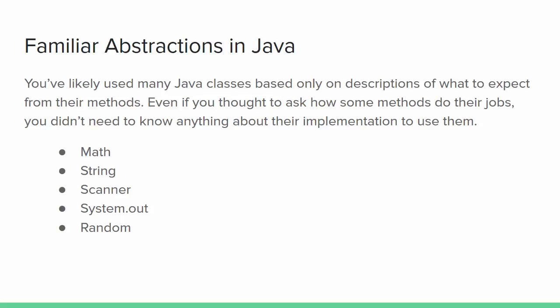It's very unlikely that you were shown any of the code inside the common classes you were introduced to early in your programming career. You simply started using them after reading their documentation or being told how to use them and what to expect from their methods. How does the Math square root method work? How are characters managed inside String? How does Scanner tokenize input streams? How does System.out.println make characters appear in the standard output stream? What is the function that generates random numbers in Random? Knowing how these classes do their jobs wasn't necessary to use them.